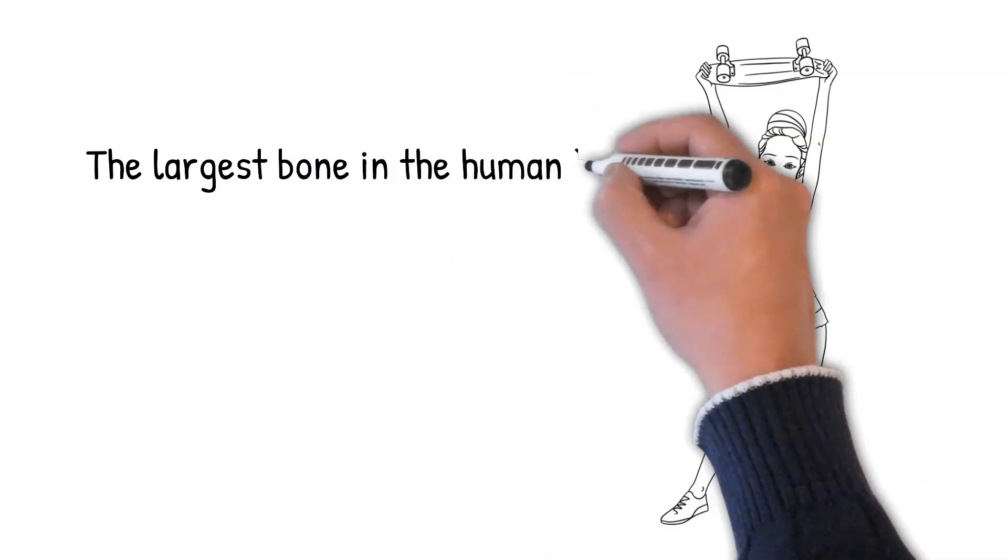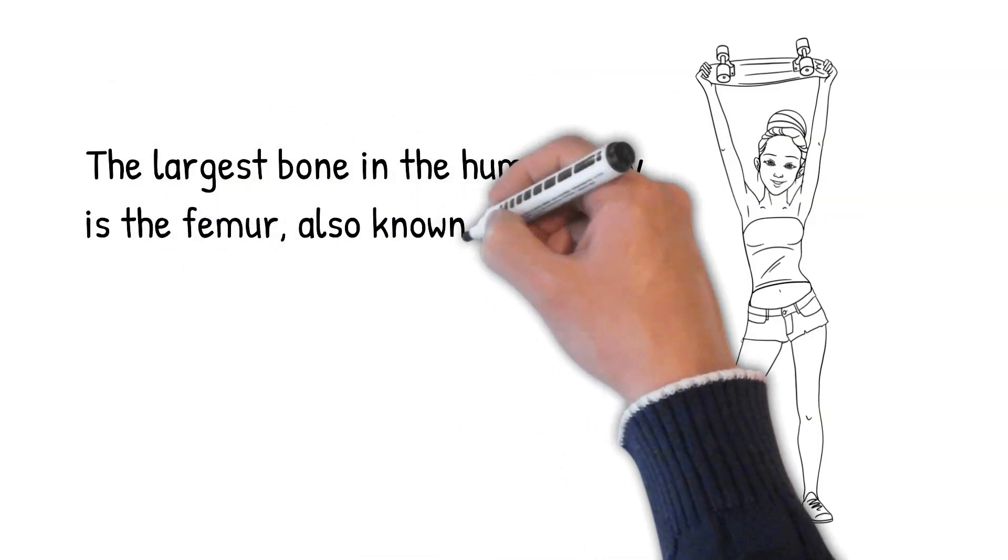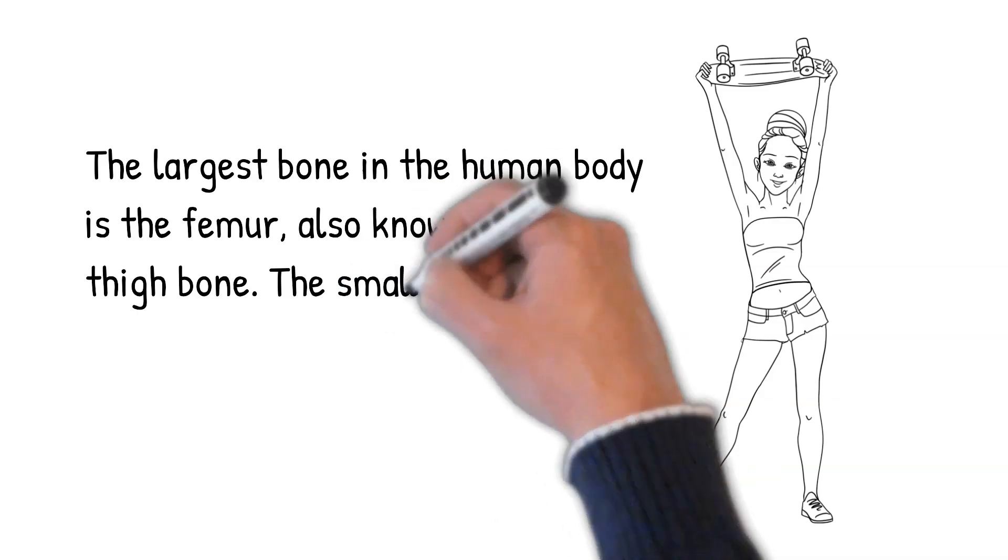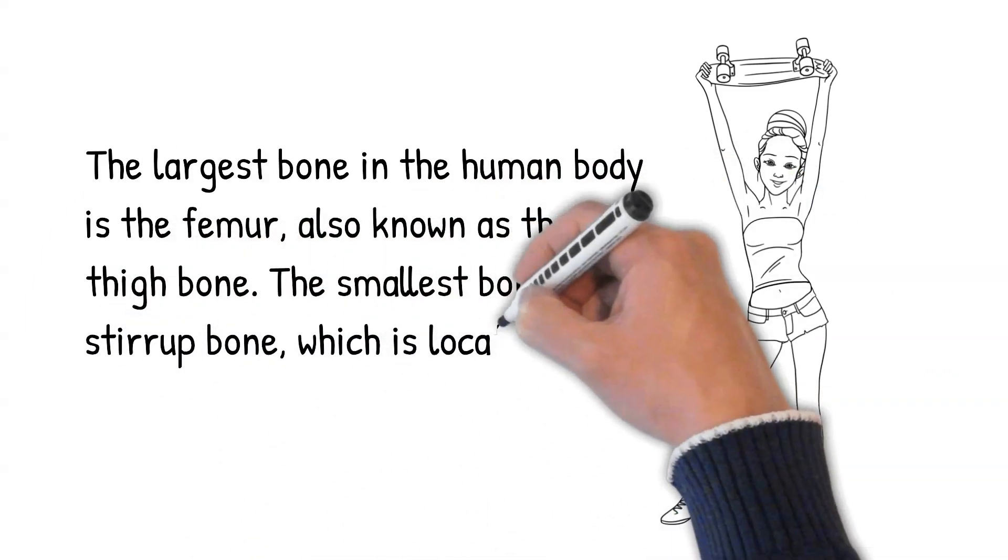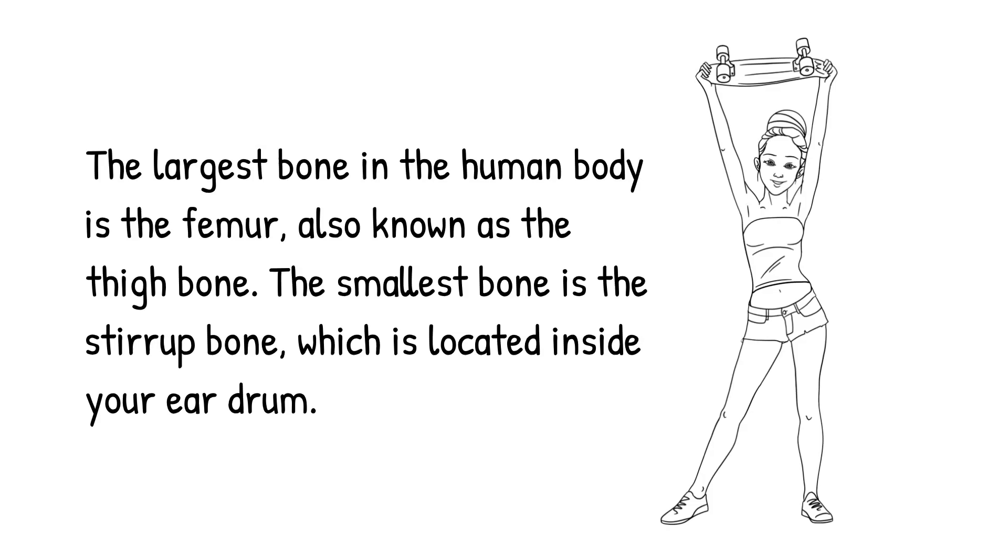The largest bone in the human body is the femur, also known as the thigh bone. The smallest bone is the stirrup bone, which is located inside your eardrum.